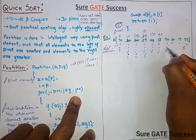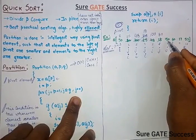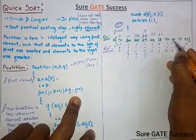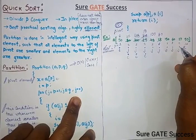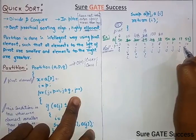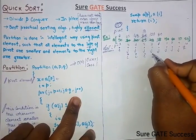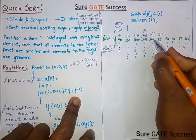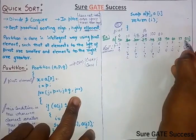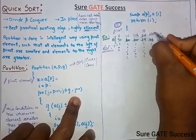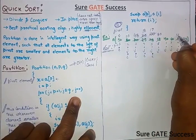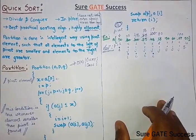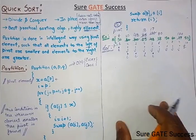We continue checking: is it smaller? No — escape. Is it smaller? No — escape. Is it smaller? No. Is it smaller? Yes — it is smaller. So we increment the I-th value and replace it with the J-th value. That is, 17 goes here and 100 goes there.